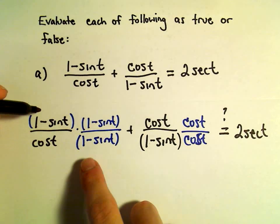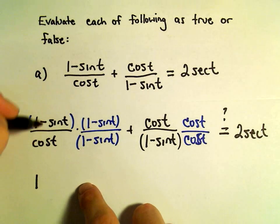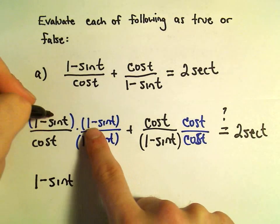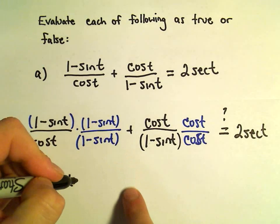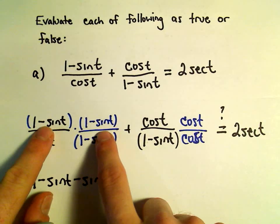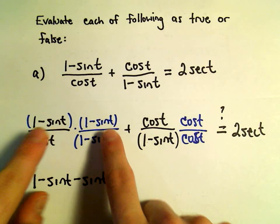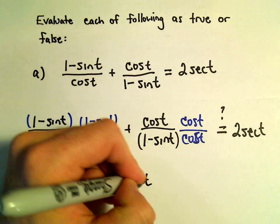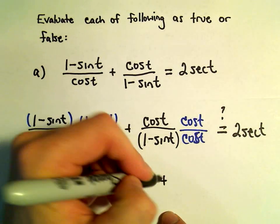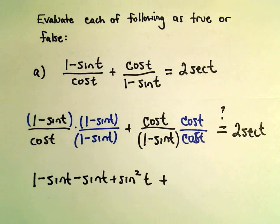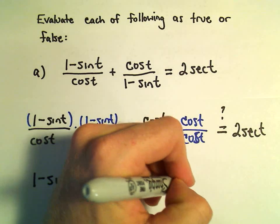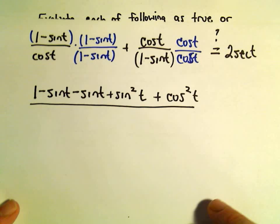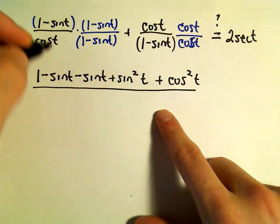Let's simplify the numerators. We've got 1 times 1 which will be 1. We have 1 times negative sine t which will be negative sine t. Then we have negative sine t times 1. Then we have negative sine t and negative sine t which will give us positive sine squared t. Over here we'll get cosine times cosine, so cosine squared t.